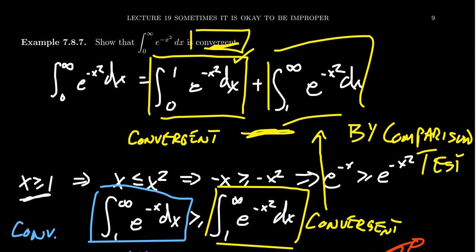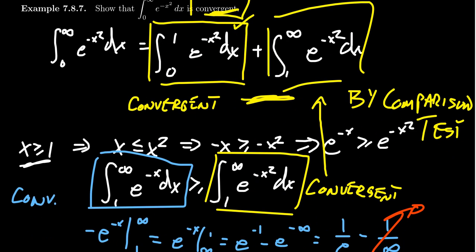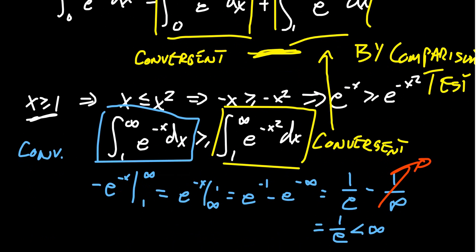Now, be aware that we know this integral is convergent, but we don't know what the value is — we do not know what it adds up to be, at least not without a separate argument. We did compute that the integral from one to infinity of e to the negative x adds up to one over e. That doesn't tell us the value of the e to the negative x squared integral — it just tells us that integral is less than one over e. So we have an upper bound, but we've only determined convergence, not actually computed it. We do know it's a finite number.